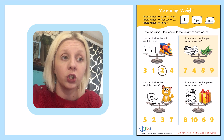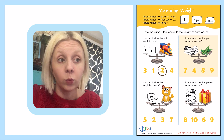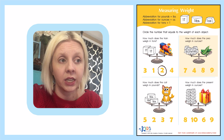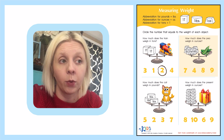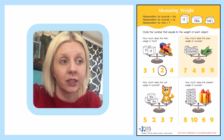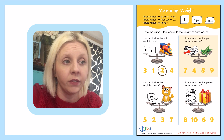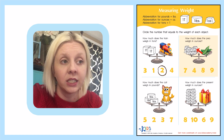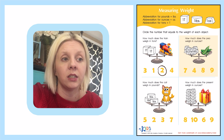The next one is how much does the pea weigh in ounces. Here's our pea on the scale, and on the other side we're going to count up the number of ounces that a pea weighs: one, two, three, four, five, six, seven, eight. So eight ounces.